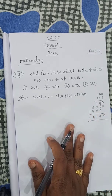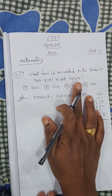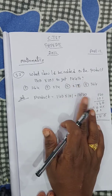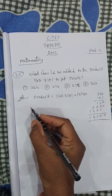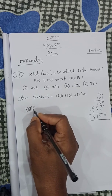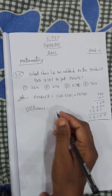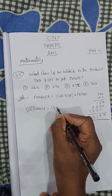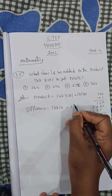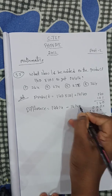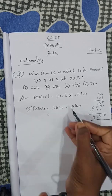Now, what is the difference? The number given here is 14414, and the product we got is 14140. The difference between both numbers — difference means subtraction.